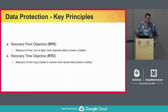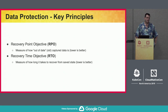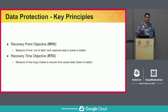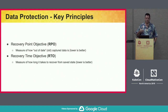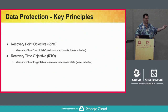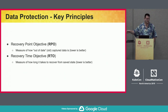There are two key principles: Recovery Point Objective (RPO) and Recovery Time Objective (RTO), both measured in time. RPO is the idea that you've captured some state, and if you have to use it later, how old is that state by the time you use it — lower is better. You don't want your last backup to have been six months ago. RTO measures how long it takes to recover given that data, regardless of its age, and depends on how available that data is to you.